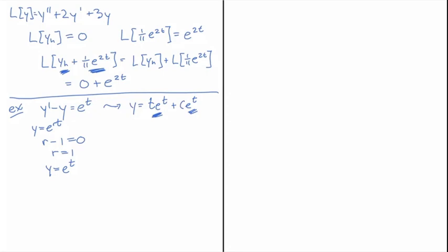So what this suggests is that I have a problem. This is a general solution to the homogeneous equation, c e to the t. What this suggests is that when I plug in an e to the t on the other side, I can't use the method of undetermined coefficients because if I plug e to the t into the equation, I just get zero.